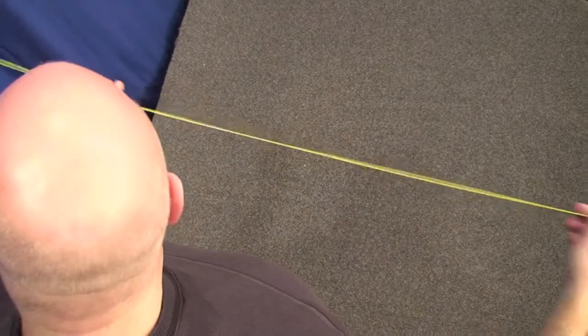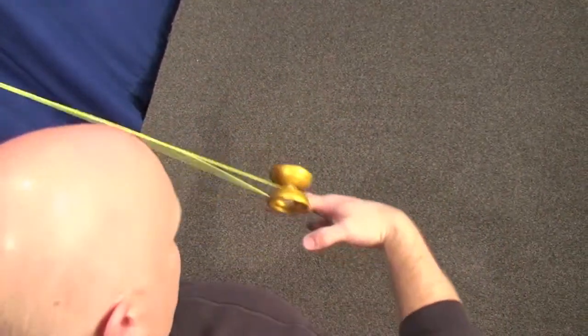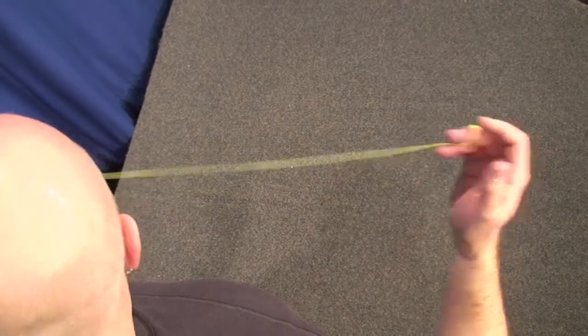The Thrill Hand Grind is where you grind the yoyo on, yep, you guessed it, your throw hand. You have to do this twice for this trick to count.